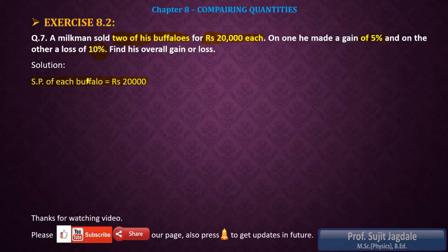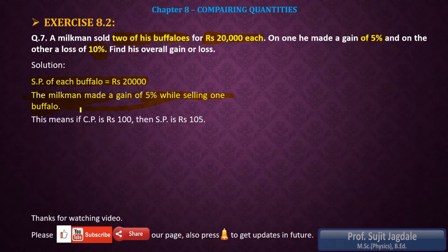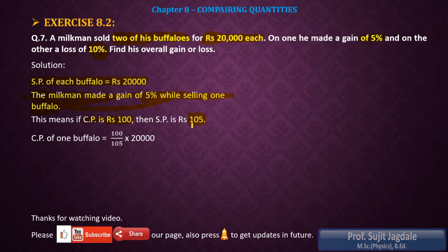The SP for each buffalo is Rs 20,000. For the first buffalo, the milkman made a gain of 5%. Gain means profit, so we use the profit formula: if CP is 100, then SP is 105. Therefore, CP of the first buffalo equals (100/105) × 20,000.